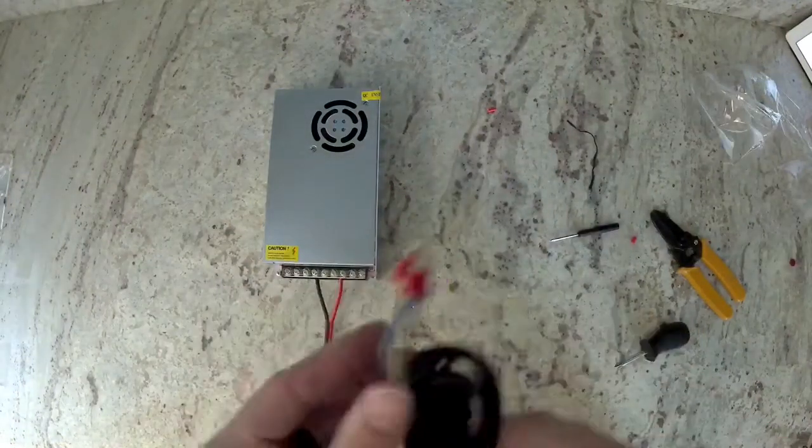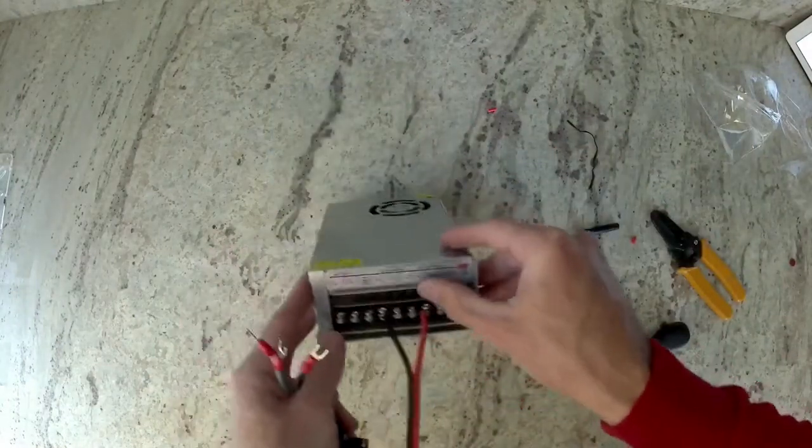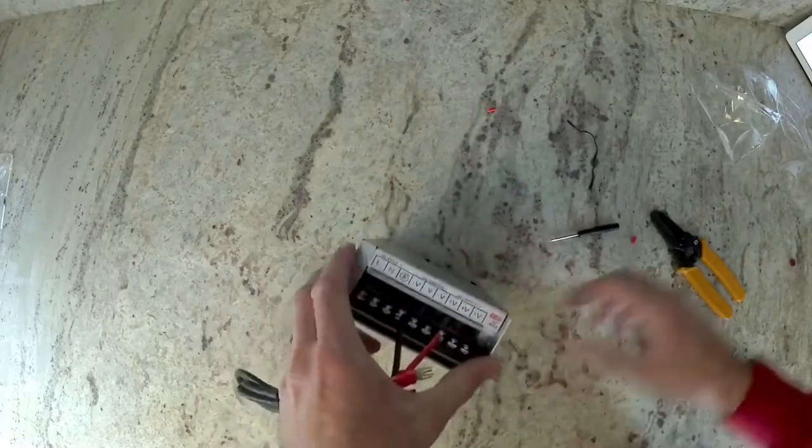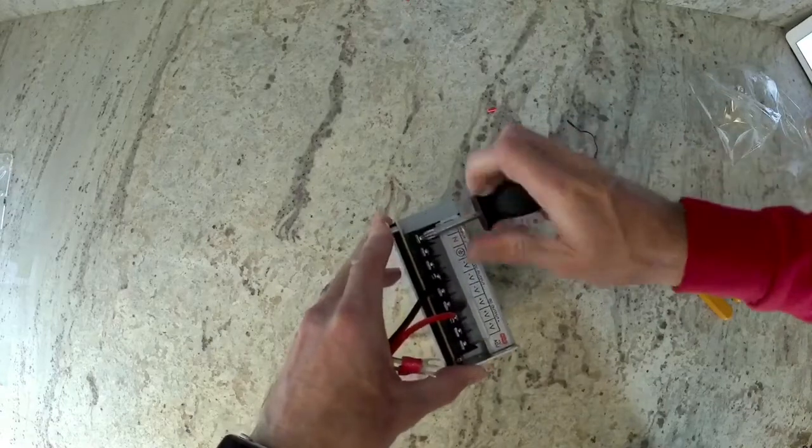Now we're going to install our power cord. If you notice at the end, there's going to be three wires: brown, green with yellow, and blue. Those are going to go into the far left connectors, which is L, N, and then the ground.